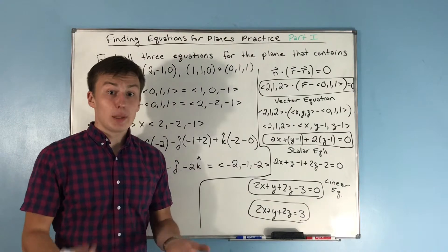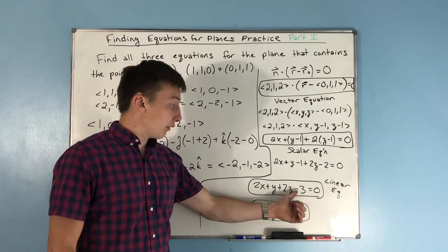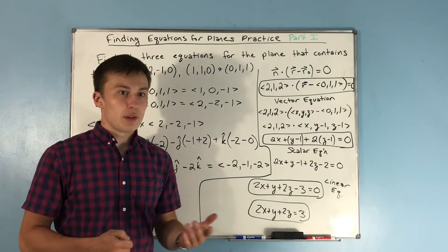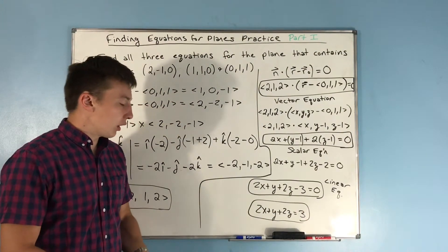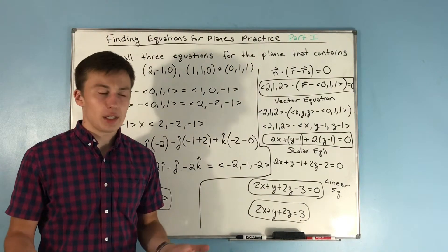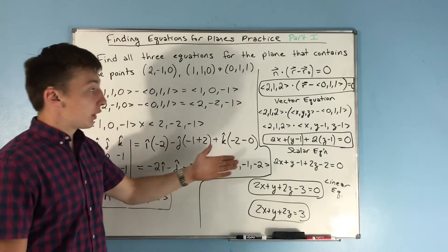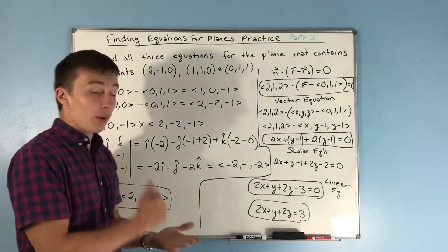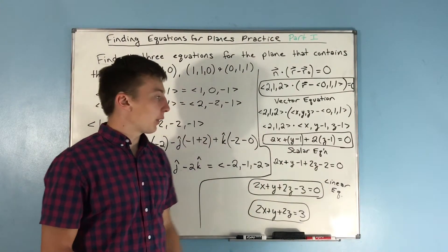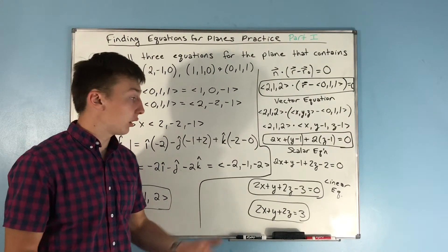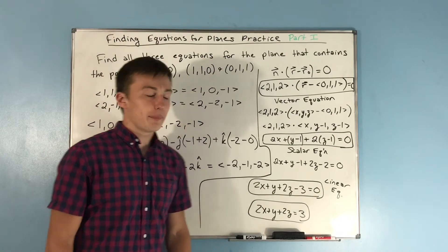Just a fair warning — some professors are strict about which side the constant term appears on, and different textbooks handle it differently. I'd definitely ask your professor if you think they're picky about it. So to recap: we found the vector equation using the point and normal vector, took the dot product to get the scalar equation, then distributed and combined terms to get the linear equation.